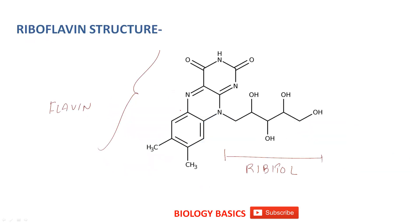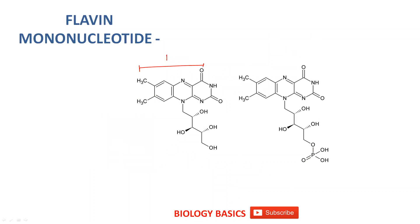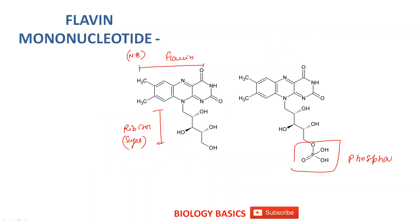Let's have a look at the structure of riboflavin. This is the riboflavin structure. This is the flavin part — your nitrogenous base — and this riboflavin portion is the sugar. So: nitrogenous base, sugar, and if you attach a phosphate to it, this is known as a nucleotide. So flavin mononucleotide — I hope this is clear.